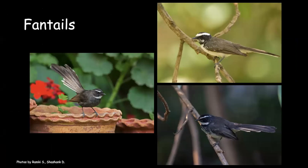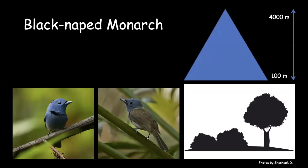Then there are birds not in Muscicapidae that we earlier thought were flycatchers but still call them flycatchers. The three fantails found in peninsular India and the Himalayas — white-throated, white-browed, and white-spotted fantail — are all very distinct and easy to identify. They are always moving from branch to branch, very active birds. Then there are monarchs, which we earlier thought were flycatchers. India has about two or three subspecies — males are much prettier than females with a blue head, pale belly, and a black necklace. Found up to middle elevations mainly in undergrowth and trees.